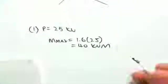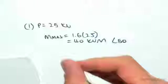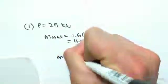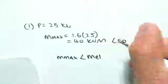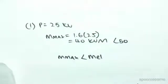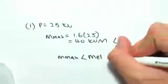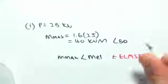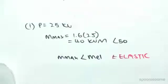So 40 kilonewton meters is less than 50, which means that our M_max is less than M_el. And what that means is that if the maximum moment our beam is experiencing is less than the elastic limit, it means that our beam is still elastic. So we haven't reached any plastic deformation; it's all elastic.